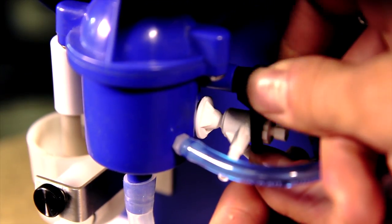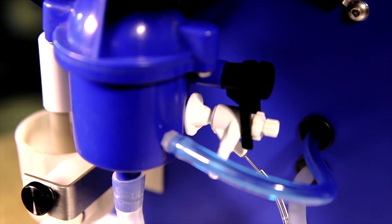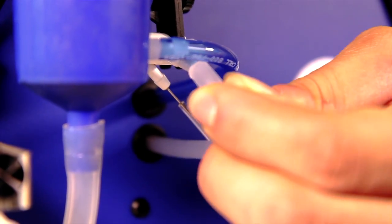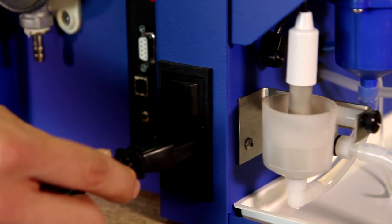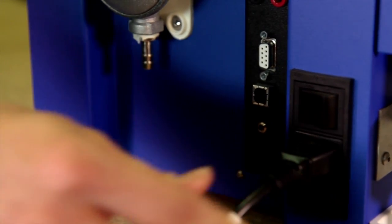Attach the nebulizer to the mixing chamber and the air to the front barb. Attach the power cord to the BWB and the outlet and finally just add gas.